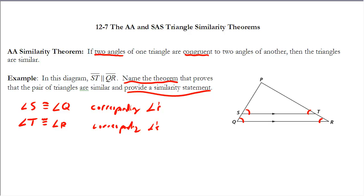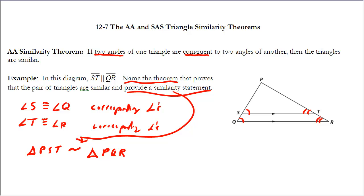I'm not looking for an exact proof here, just justifying why this is the case. Since I have two pairs of congruent angles, I can use the Angle-Angle theorem to say the two triangles are similar. So triangle PST is similar to triangle PQR — that's your similarity statement — and we justify it with the Angle-Angle Similarity Theorem.